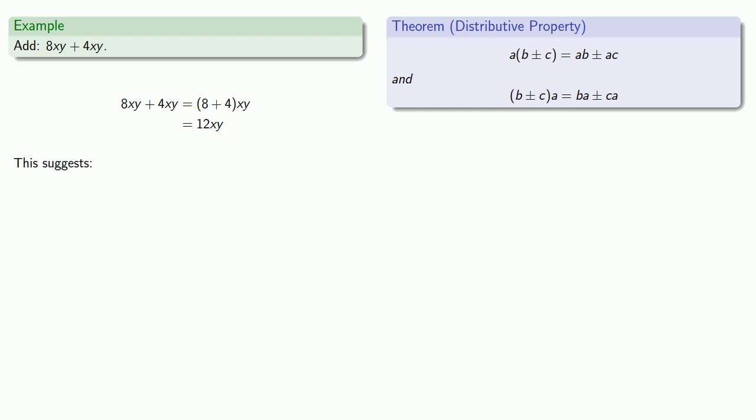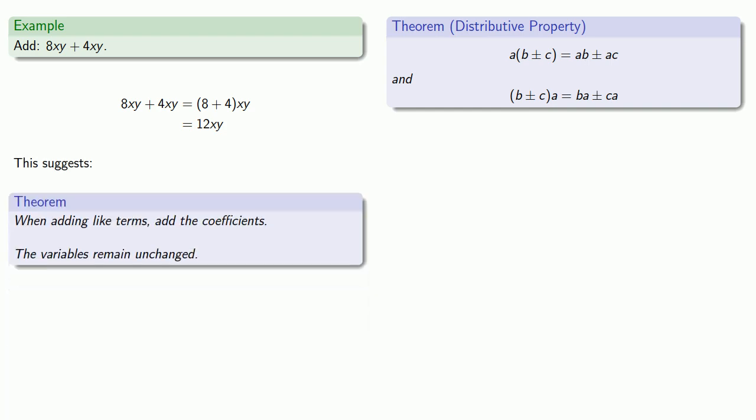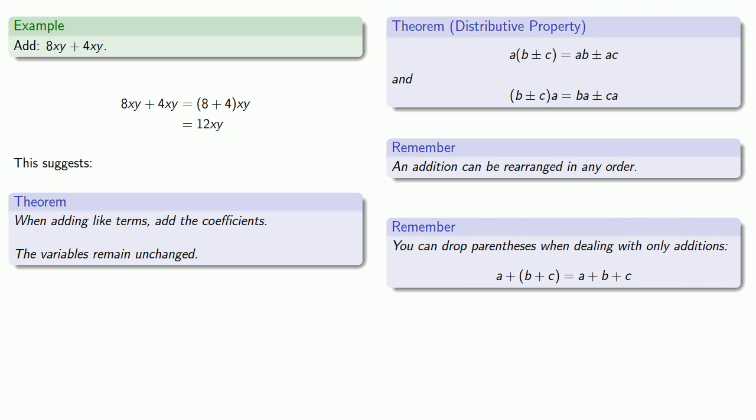And this suggests a very useful thing. When adding like terms, add the coefficients. The variables remain unchanged. While the distributive property holds for both addition and subtraction, additions have two very useful features. First, an addition can be rearranged in any order that we want. And second, if we only have additions, we don't have to worry about the parentheses. We can just drop the parentheses.